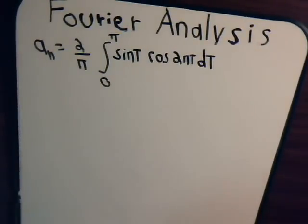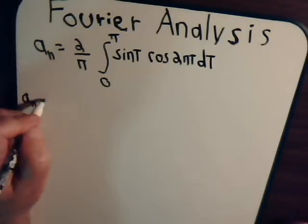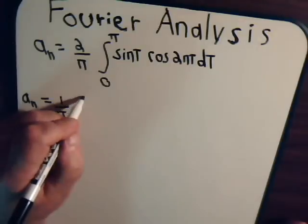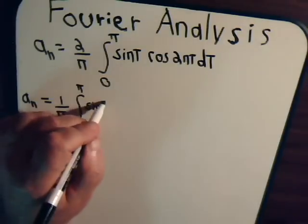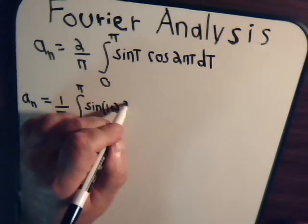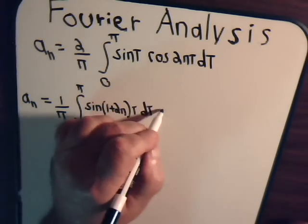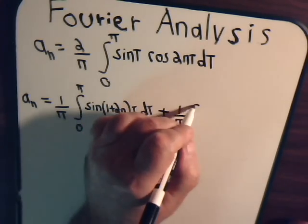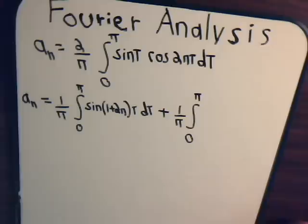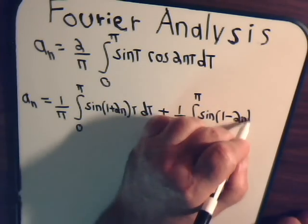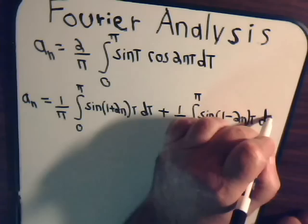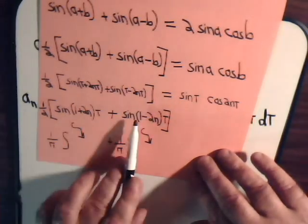So a sub n equals 1 over π, the integral from 0 to π, sine of (1+2n)t dt plus 1 over π, the integral from 0 to π, sine of (1-2n)t dt. And this comes from this right here.